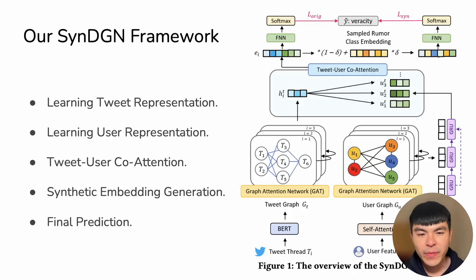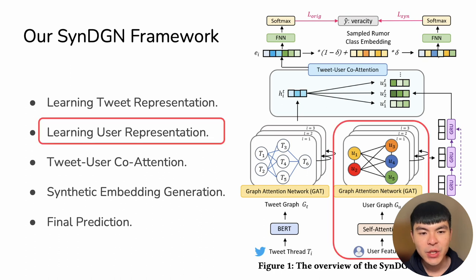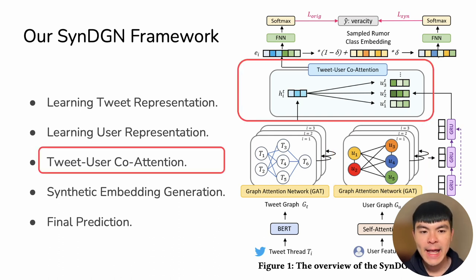Our proposed framework is called SynthDGN. The first step is to learn the tweet representation, which consists of a BERT model and a graph attention network. The second step is to learn the user representation, where we use the self-attention mechanism with the graph attention network to derive the user representation. Then, we fuse both representations from tweet and user using a co-attention mechanism.